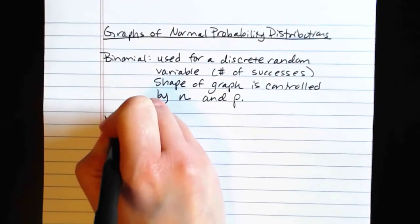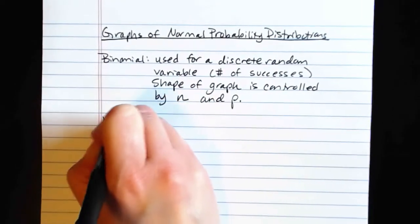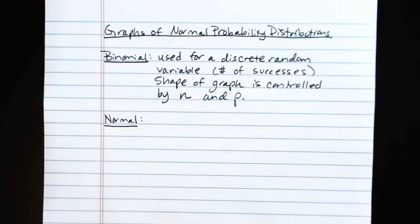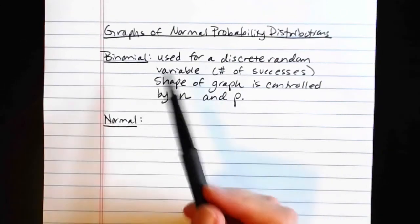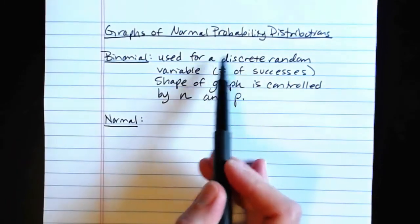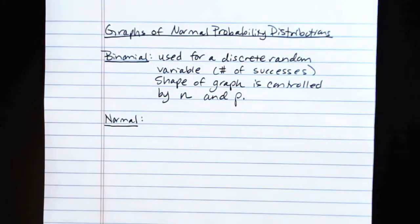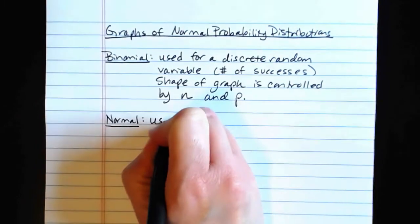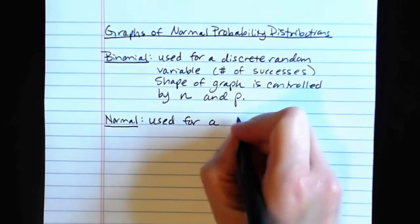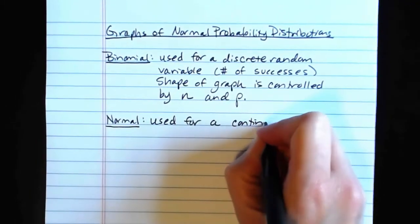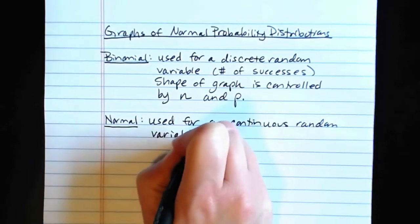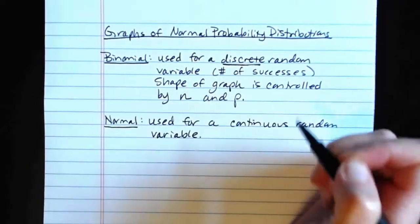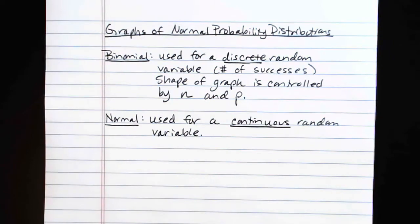Now, the normal is still a probability distribution. So it still tells us how probabilities are essentially parsed out for different values of the random variable that we're dealing with. But one of the main differences between the binomial and the normal is the binomial is a discrete probability distribution. The normal, by contrast, is used for continuous random variables.